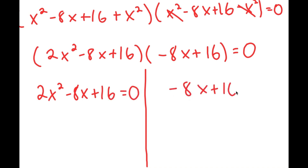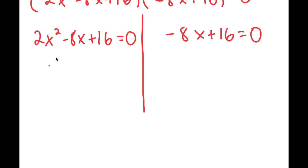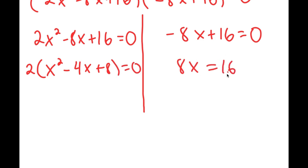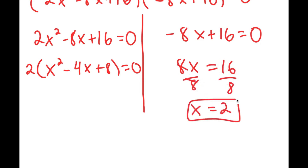Now from here I'm going to factor out 2, so I get 2 times (x squared minus 4x plus 8) equals 0. And for the other factor, I have negative 8x plus 16 equals 0, which means 8x equals 16. Dividing both sides by 8, I get x equals 2. That's one solution.